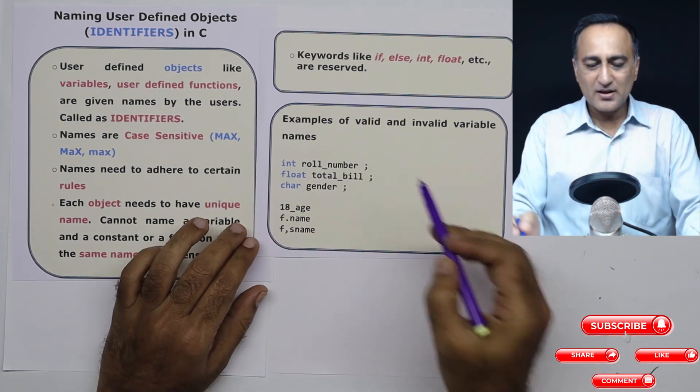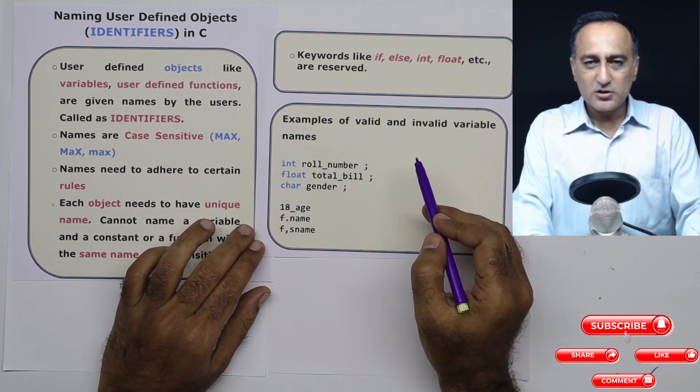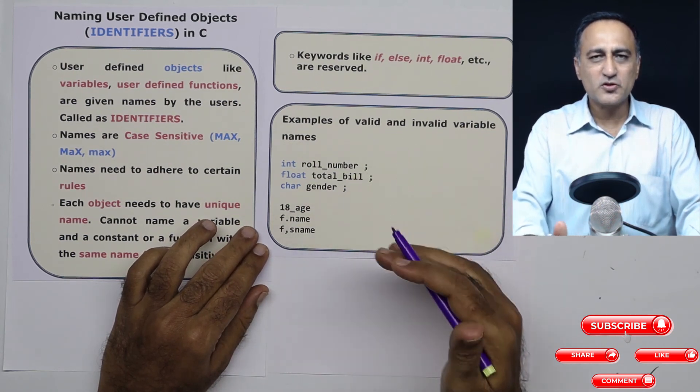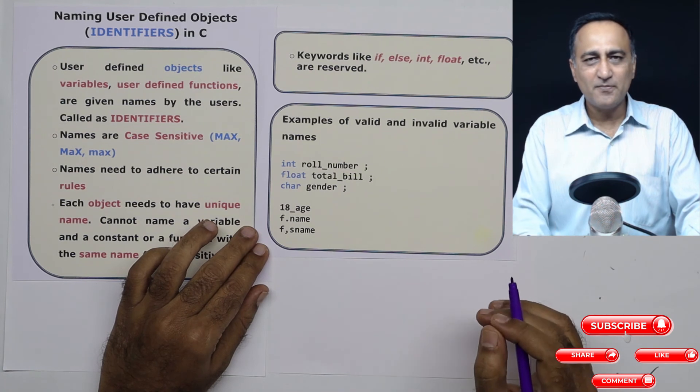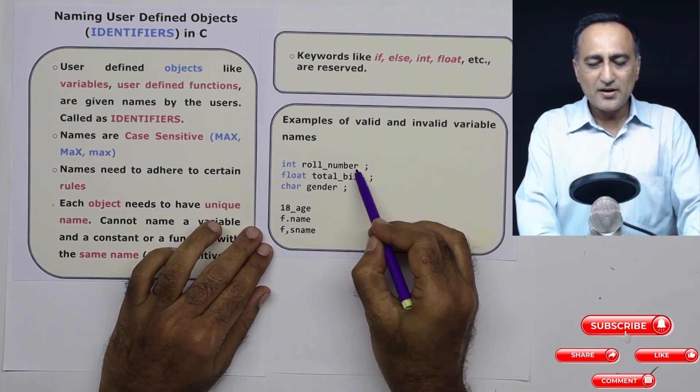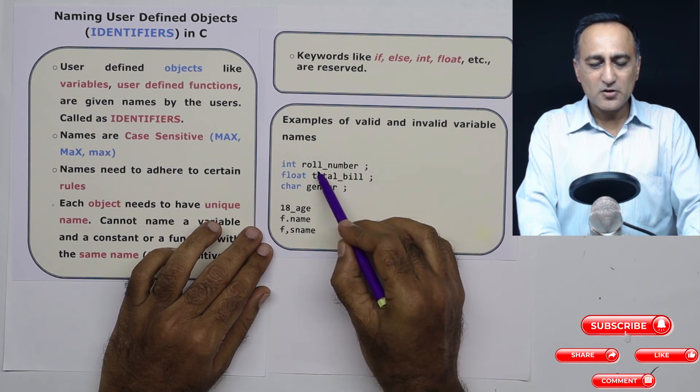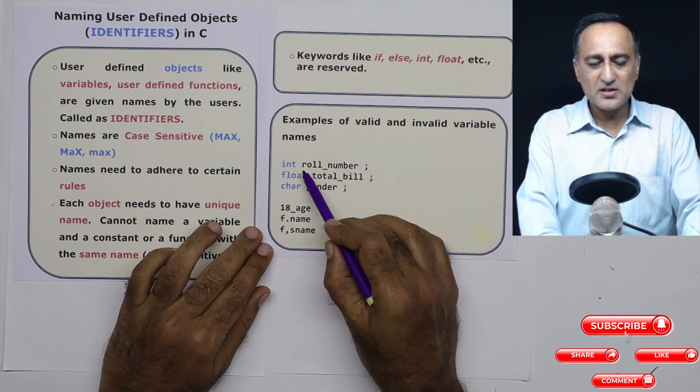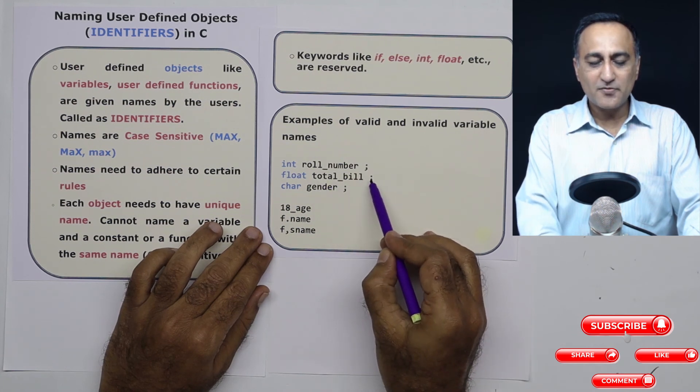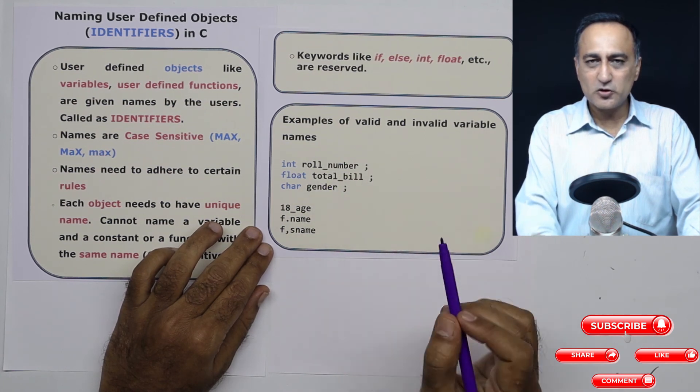Based on what I have told you, there are certain rules for valid and invalid variable names. I'm just going to show you a small set, which should give you a brief idea of which are valid and which are invalid. This is a valid role number name, because it's separated by an underscore, begins with alphabet, no problem. Total bill, this is also perfectly fine. Character gender, this is also perfectly fine.